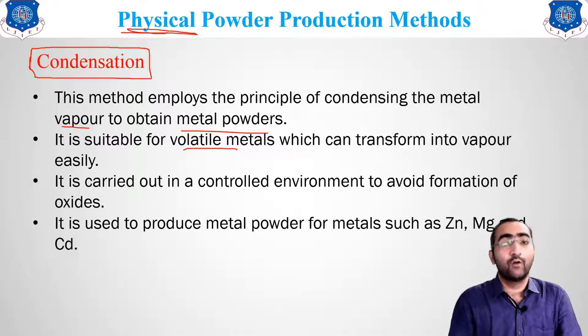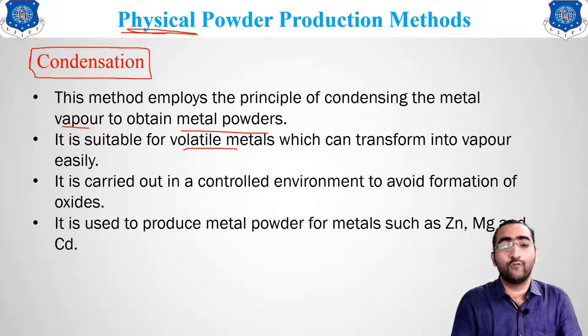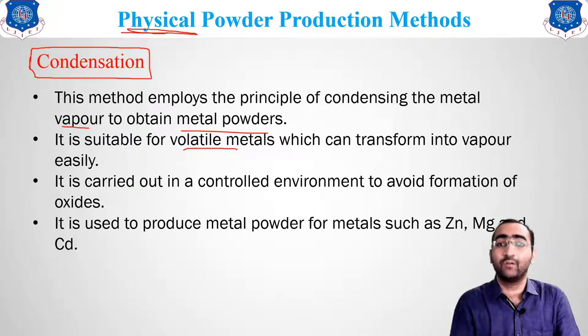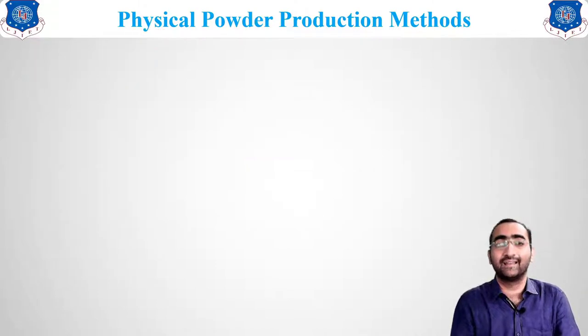The metals suitable for this condensation powder production method are zinc, magnesium, and cadmium — because their boiling points are relatively low.